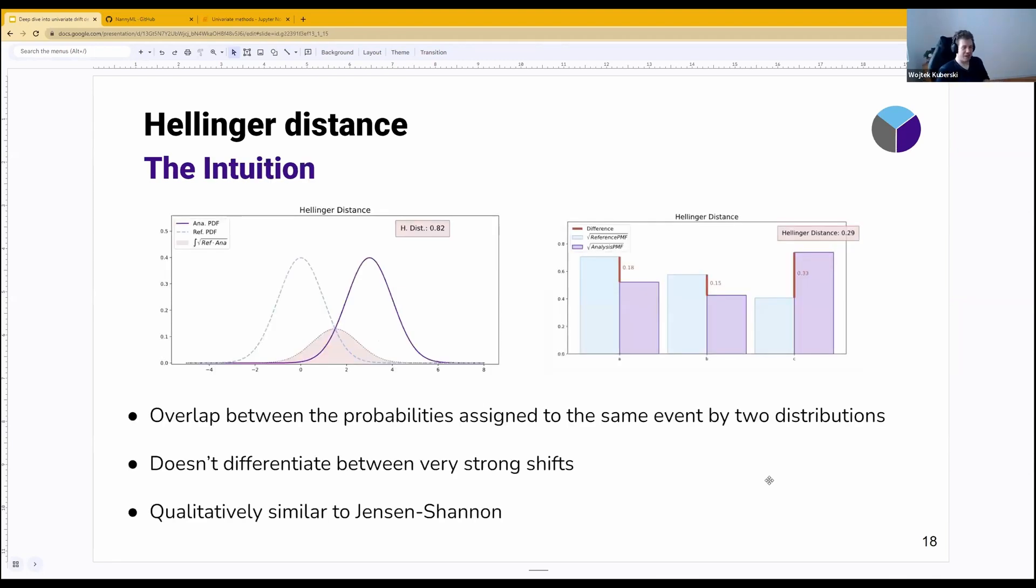The intuition is quite similar again. I promise you all the others will have completely different intuitions, so bear with me here. What it actually quantifies is the overlap between the probabilities assigned to the same event by two distributions. Let's say you have an event and the value is going to be four. It's going to look at this event and quantify the overlap between the reference distribution and the analysis distribution. Here we see that the overlap is almost non-existent.